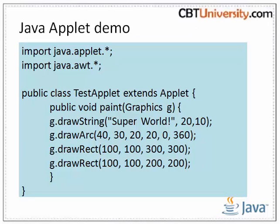To summarize: a Java applet extends the class java.applet.Applet, or in the case of Swing applets, javax.swing.JApplet. The class must override methods from the applet class to set up the user interface. This applet is a descendant of Panel, which is a descendant of Container, so it has largely the same user interface possibilities as an ordinary standalone Java application.